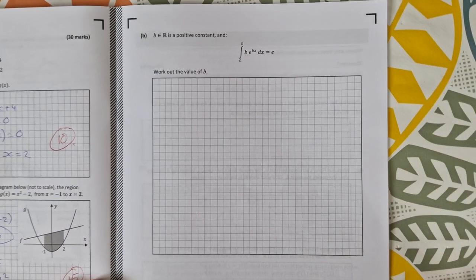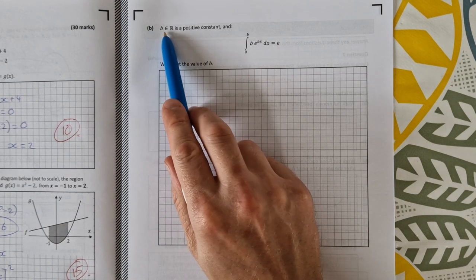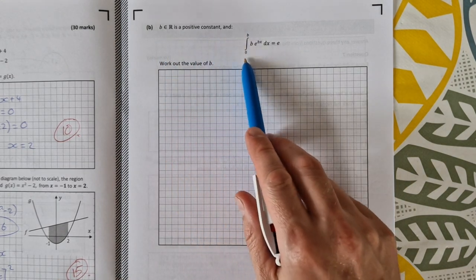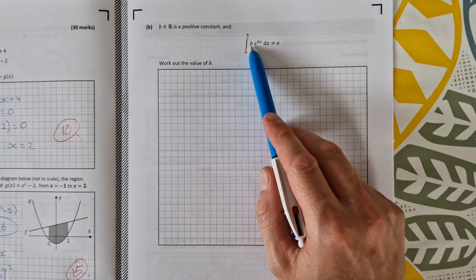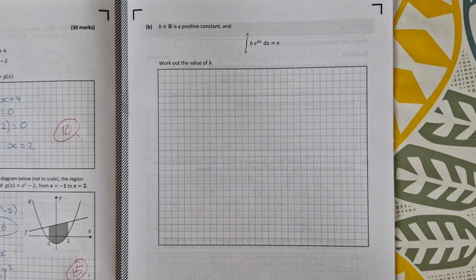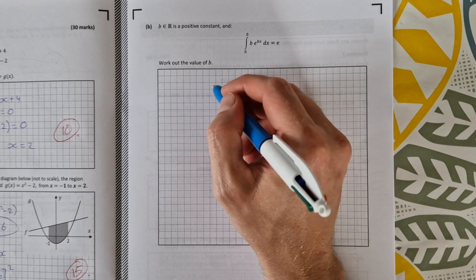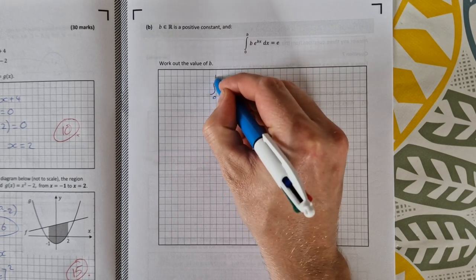Part B then: b is an element of R, is a positive constant, and the integral from 0 to b of b·e^(bx) dx is equal to e. Work out the value of b. So let's start by writing down our integral and see what we can do with it.